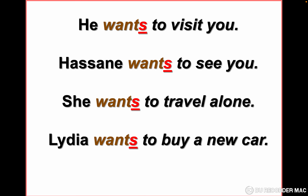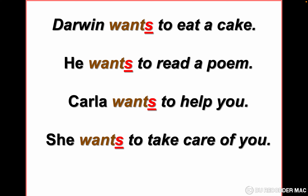Let's see real positive examples. He wants to visit you. Hassan wants to see you online. She wants to travel alone. Darwin wants to eat a cake. He wants to read a poem. Carla wants to help you. She wants to take care of you.